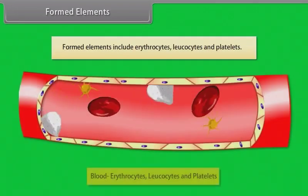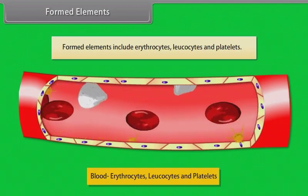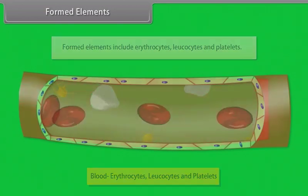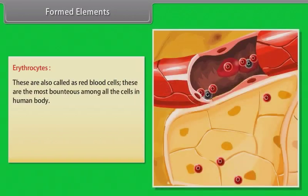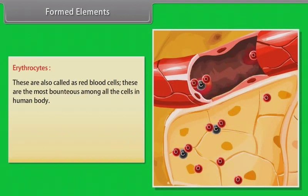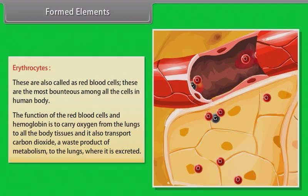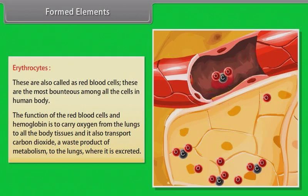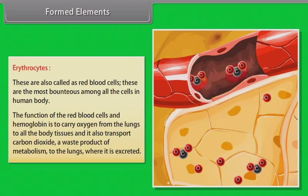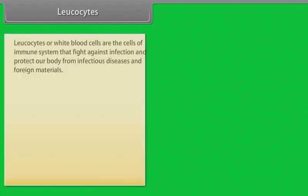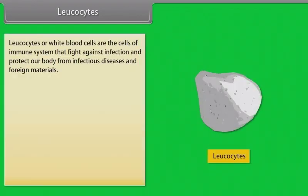Formed elements include erythrocytes, leukocytes, and platelets. Erythrocytes, also called red blood cells, are the most abundant among all the cells in the human body. The function of red blood cells and hemoglobin is to carry oxygen from the lungs to all the body tissues, and to transport carbon dioxide — a waste product of metabolism — to the lungs where it is excreted. Leucocytes, or white blood cells, are cells of the immune system that fight against infection and protect our body from infectious diseases and foreign materials.